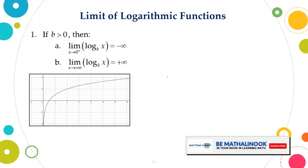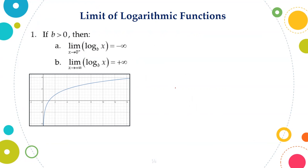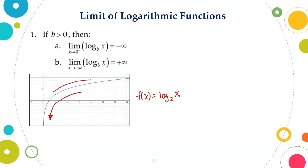Limit of logarithmic functions. If b is greater than 1, then the limit of log base b of x as x approaches 0 from the right is equal to negative infinity, and the limit of log base b of x as x approaches positive infinity is equal to positive infinity. These two theorems are evident on the graph of f(x) = log base 2 of x. Notice that as x approaches 0 from the right, f(x) approaches negative infinity, while as x approaches positive infinity, the limit becomes positive infinity.